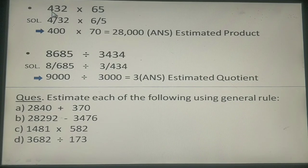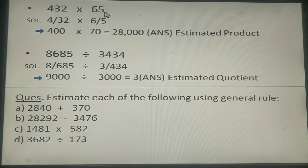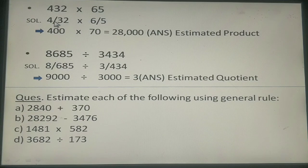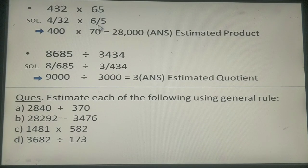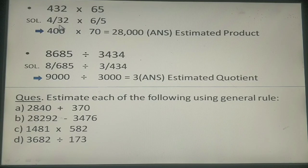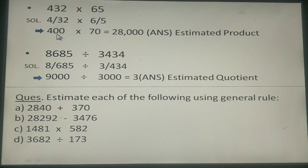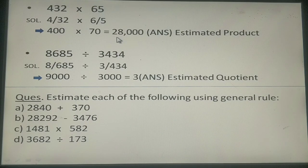Example number 3 is 432 multiplied by 65. The procedure is the same children. Again you need to put a slash here after 4. And a slash here after 6. After rounding off the numbers as done in the earlier sums. We are going to get 400 into 70. Multiplied you get the answer as 28,000. Which is your estimated product.